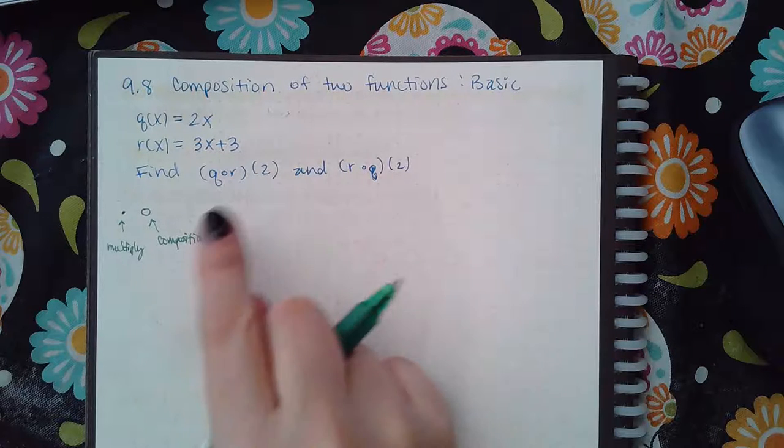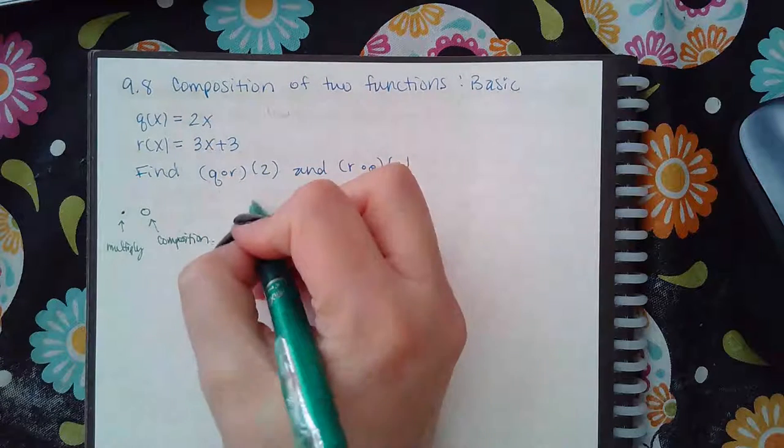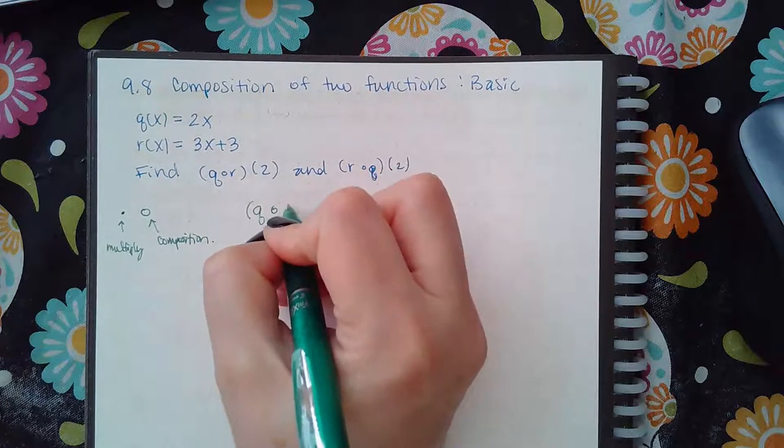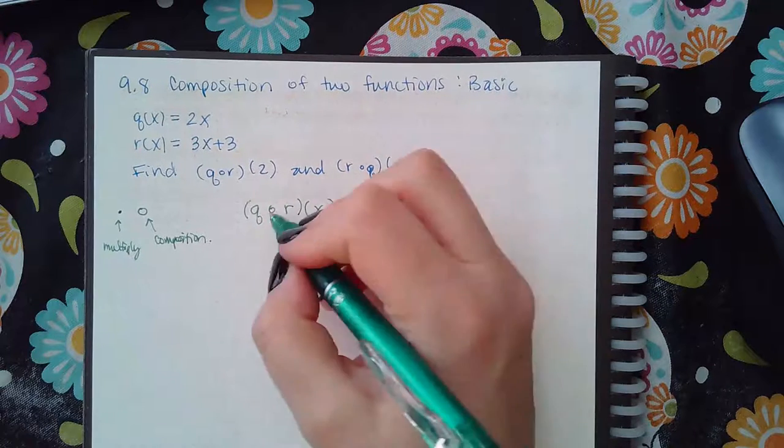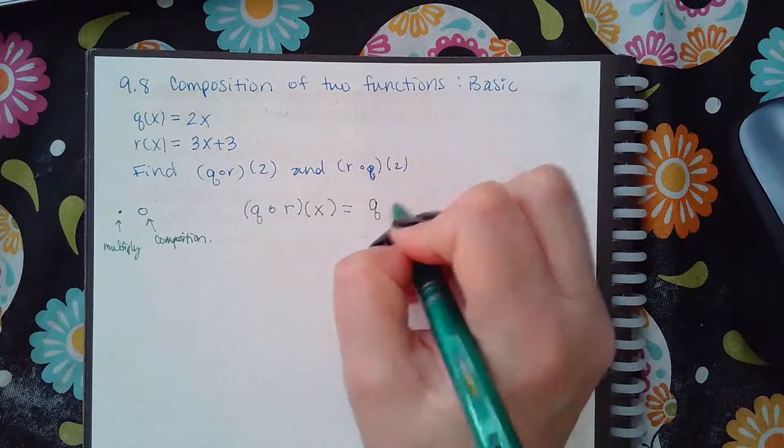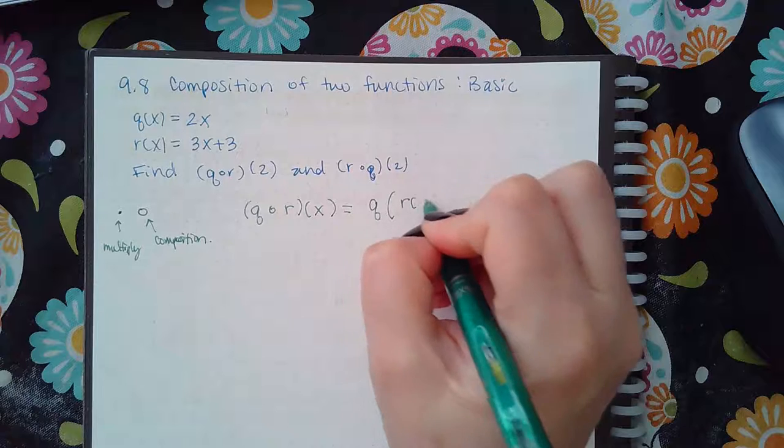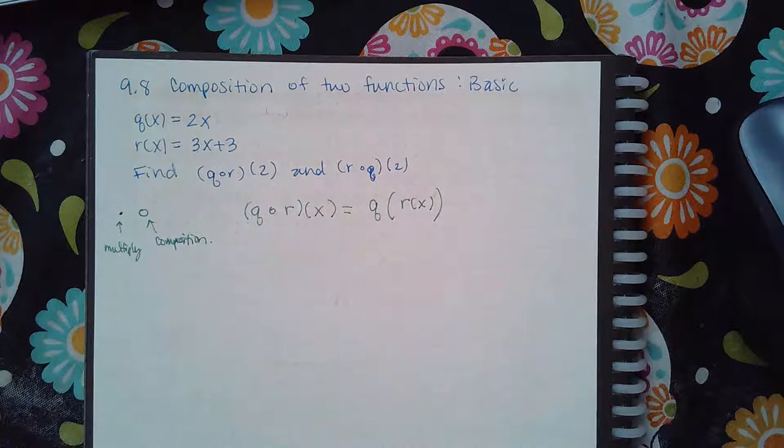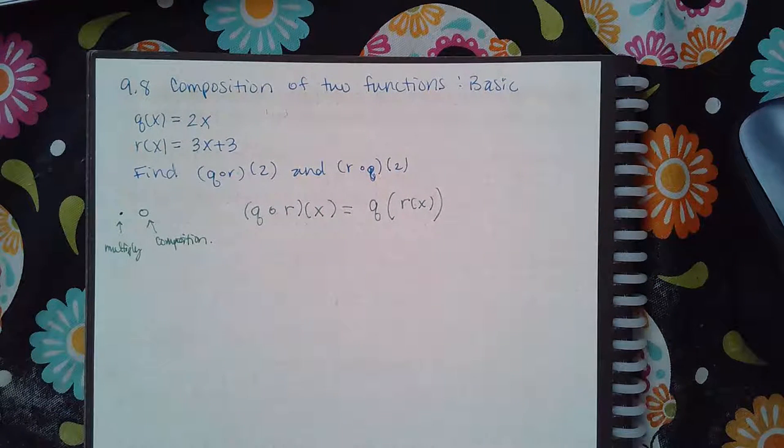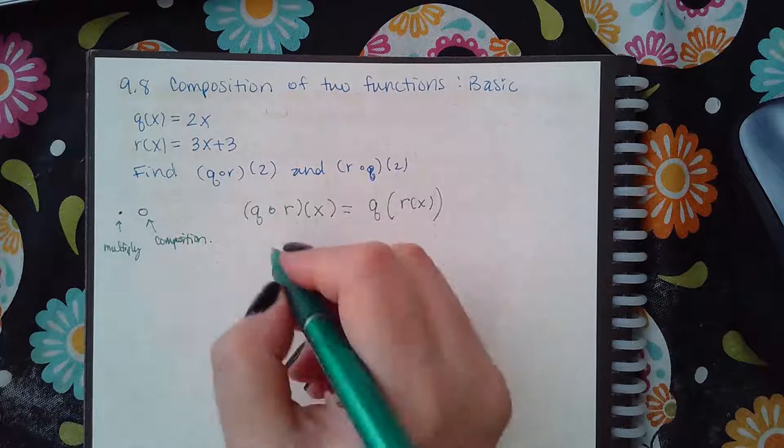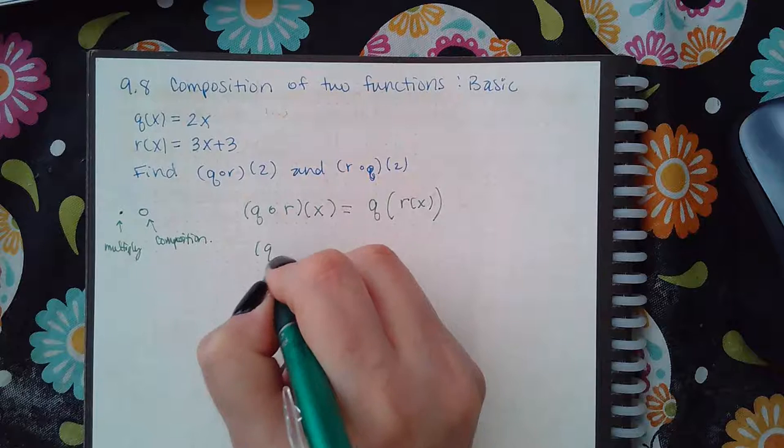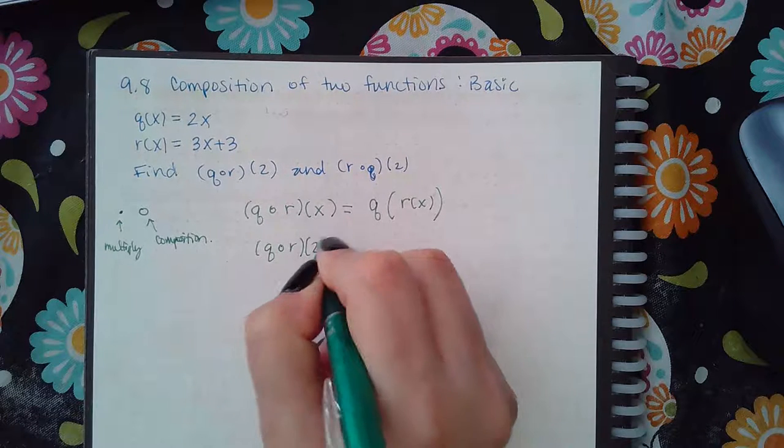Because it's an open dot, it's really best if you rewrite it using the rule. The rule is that the outside function stays on the outside and then the inside function is rewritten on the inside with the 'of x' part included. In my case, I'm trying to find q of r of two.